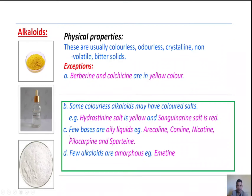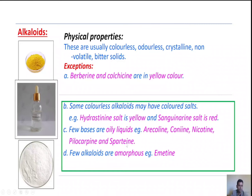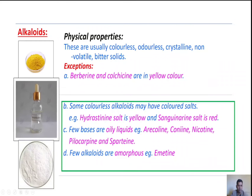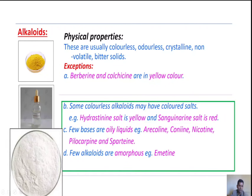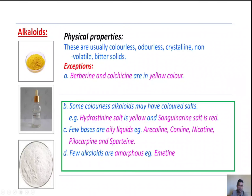Few alkaloidal bases are oily liquids — arecoline, coniine, nicotine, pilocarpine, and sparteine. For example, nicotine is a liquid. Last, few alkaloids are amorphous in nature — for example, emetine is amorphous in nature.